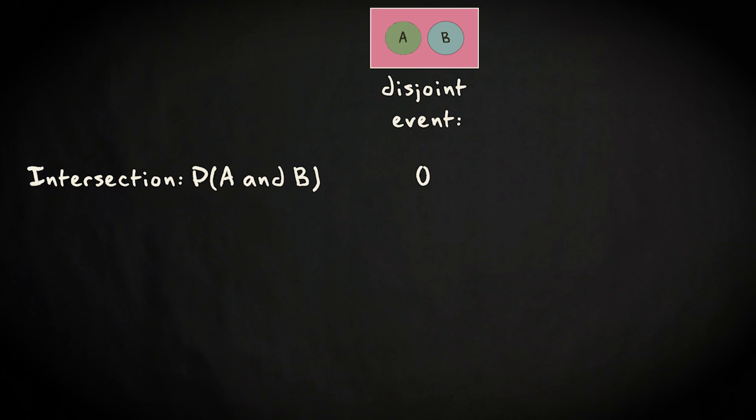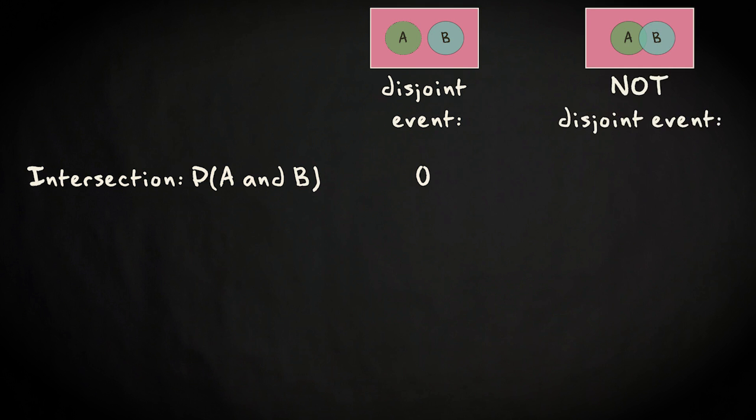If two events are not disjoint, they overlap, things are slightly more complex. Here we will assume that we are dealing with independent events. This means that the probability for one event, in the example throwing heads a second time, is not influenced by another event, throwing heads just once. For independent events A and B, the probability for their intersection is the product of the separate probabilities.